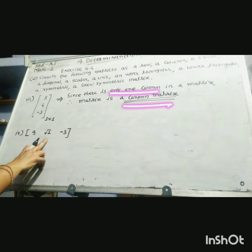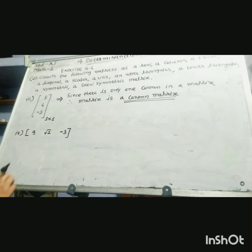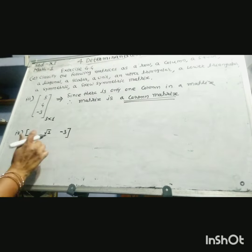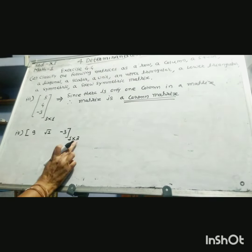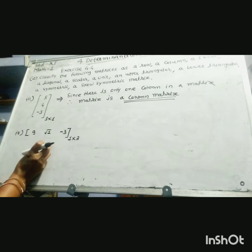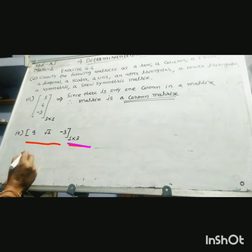4th example: here are the elements 9, root 2, and negative 3. This has 3 columns and 1 row, so the order is 1 by 3 — meaning 1 row and 3 columns. Therefore this matrix is called a row matrix.